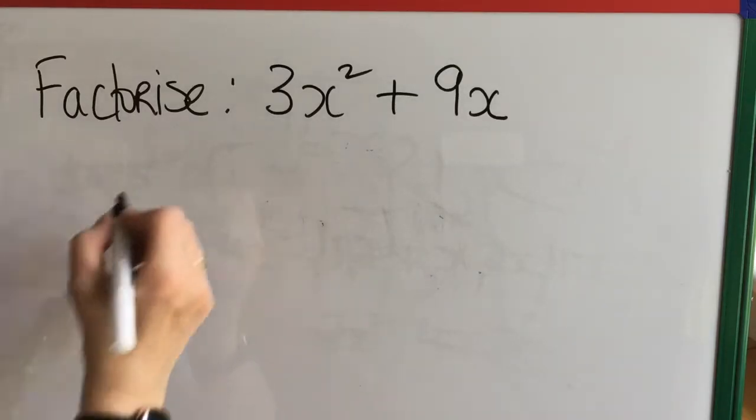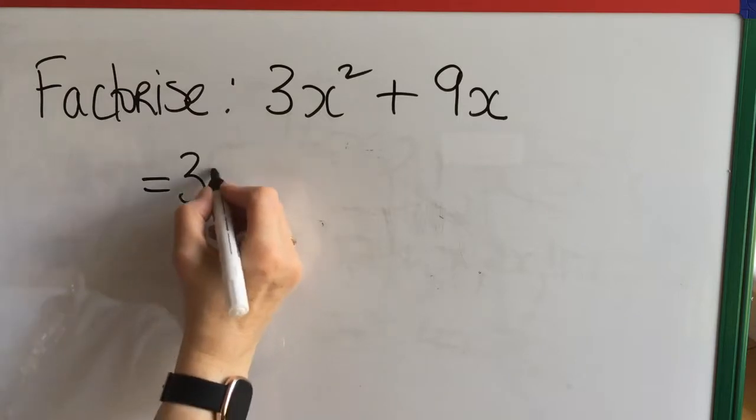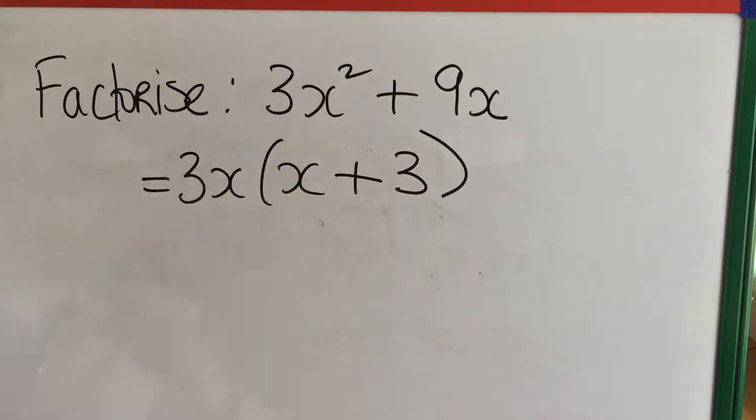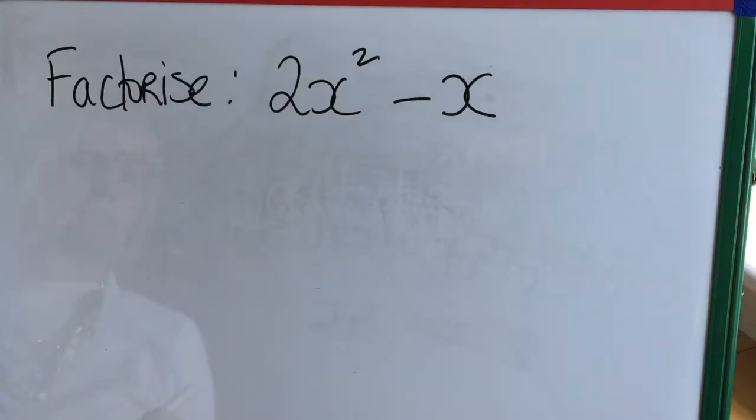The 3 is the highest common factor of the numbers. x is the highest common factor of x squared and x. So 3x is a factor of this expression and x plus 3 is a factor of this expression.